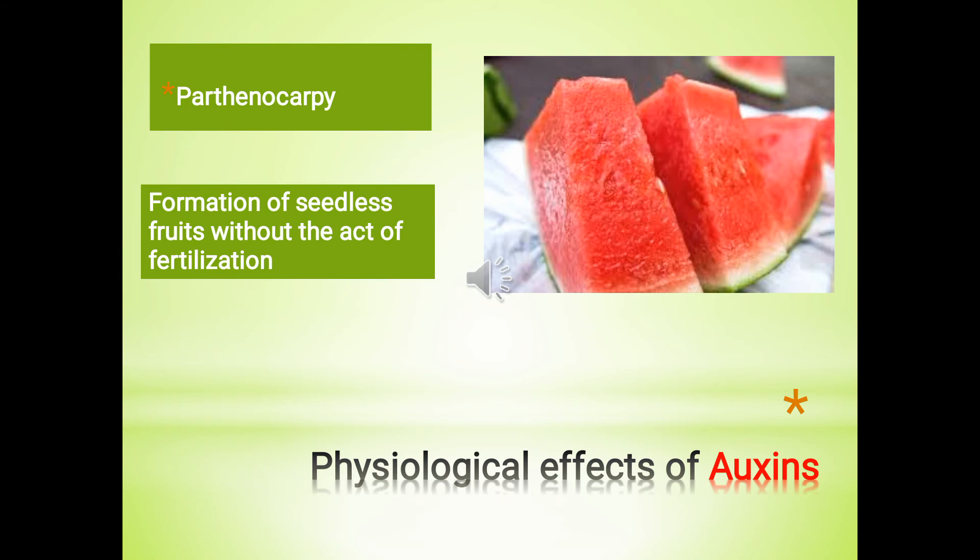Number 4: Hormones — auxins and gibberellins — are well known to induce parthenocarpy. Parthenocarpy means the formation of seedless fruits without the act of fertilization.